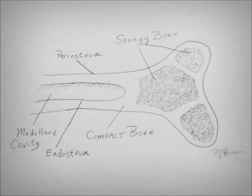As we talked about earlier, the red bone marrow is hemopoietic, or blood producing, and makes our red blood cells, platelets, and most of our white blood cells.